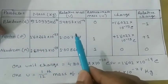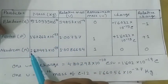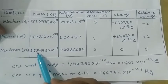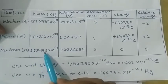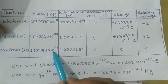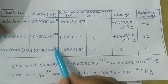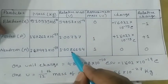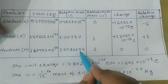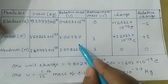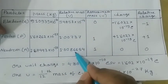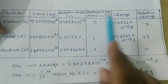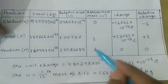The neutron mass is nearly similar to the proton mass: 1.67493 × 10⁻²⁷ kg, with a relative mass of 1.008665 atomic mass units — approximately one atomic mass unit. The neutron has no charge, with a mass number of 1.